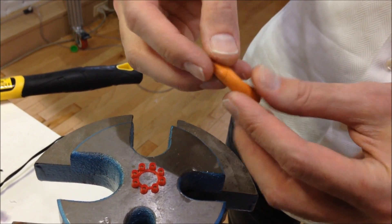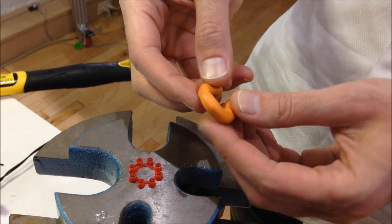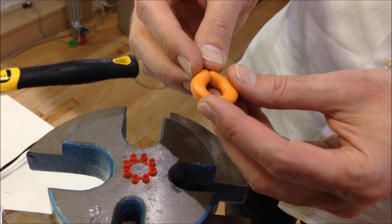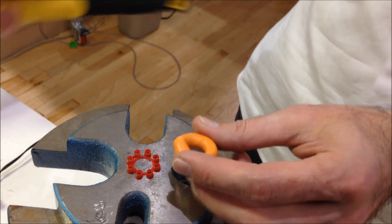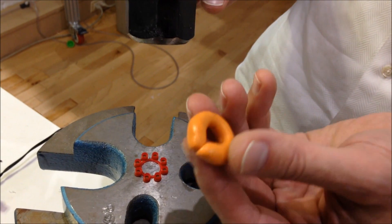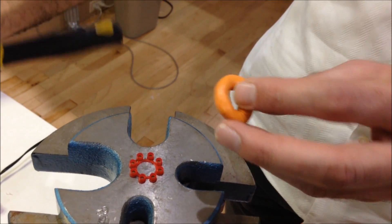the thing about Silly Putty is its viscosity increases with the velocity of flow. So if it's struck very quickly with the hammer, this stuff essentially turns into a solid, not a rubber.